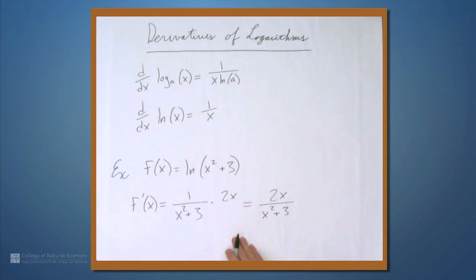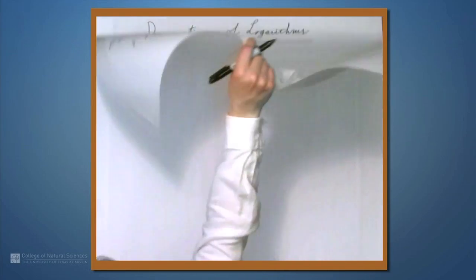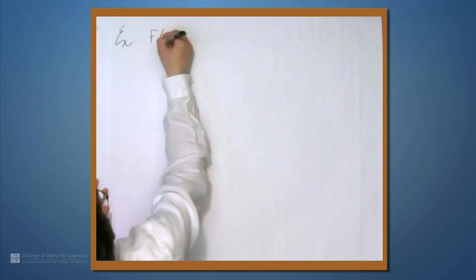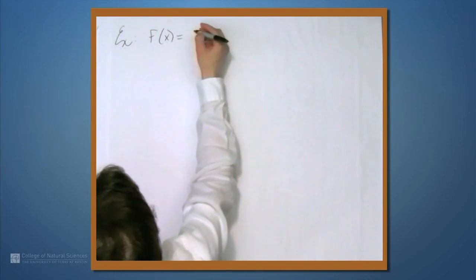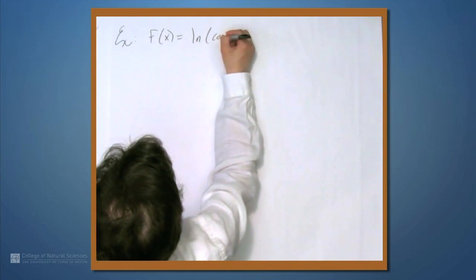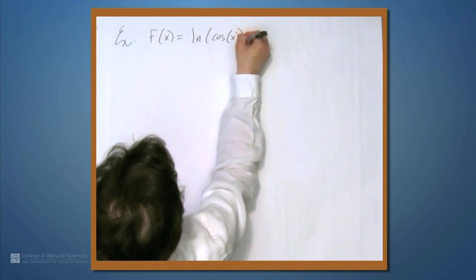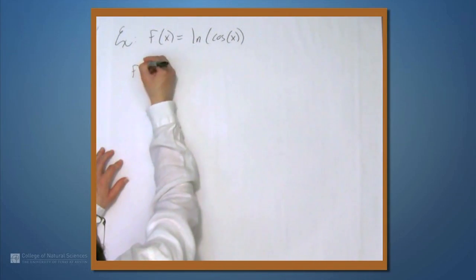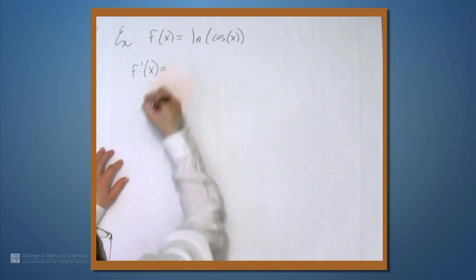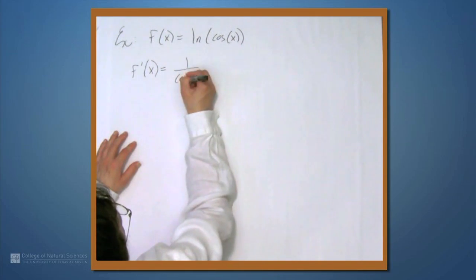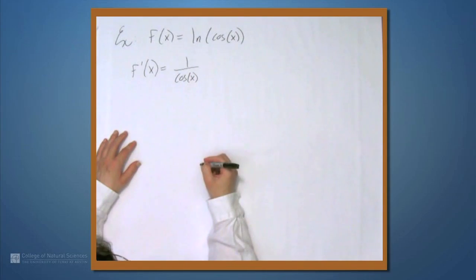Let's get another example. Let's suppose that f is natural log of cos x. Well, then f prime is 1 over cos x.